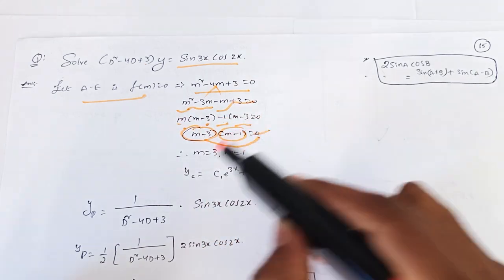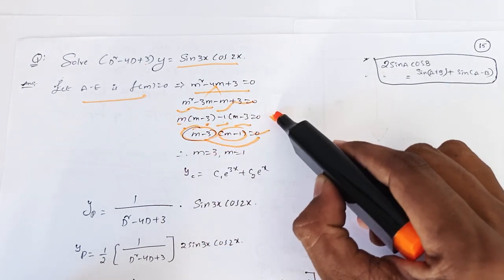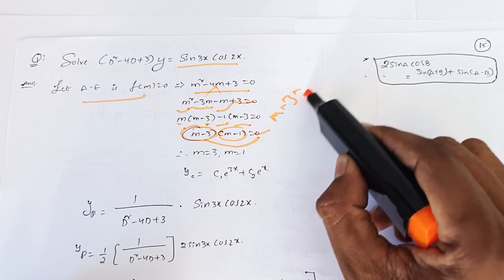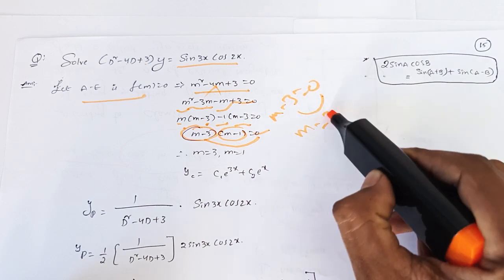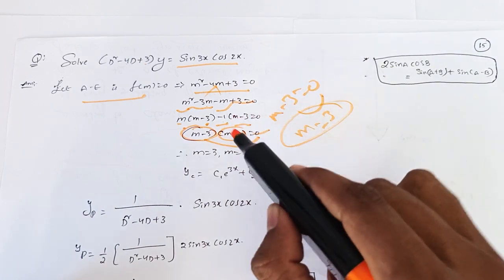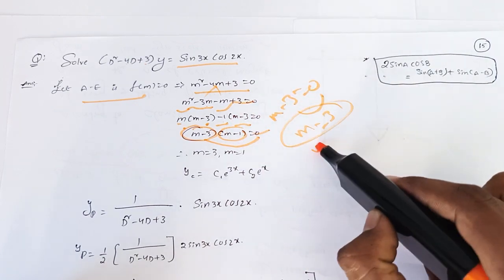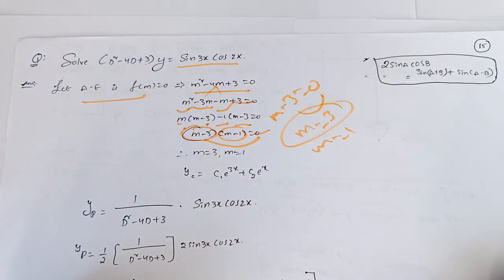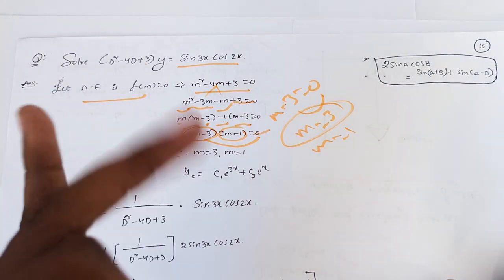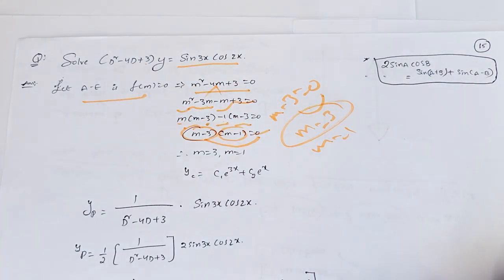First, m minus 3 equals zero, so m equals 3. And m minus 1 equals zero, so m equals 1. Therefore the m values are 3 and 1.